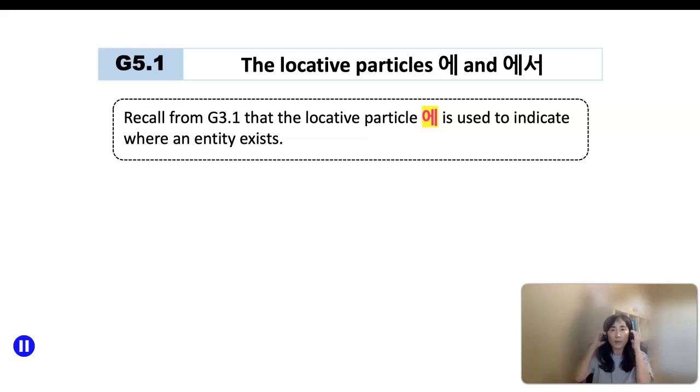Now I'm going to talk about the particles 에 and 에서, which look similar because these two particles are referred to as locative particles in that both attach to locations. However, there is a major difference between these two particles. First of all, I'm going to start with the particle 에, the locative particle 에, which we learned in grammar 3.1 when you learned how to express location.